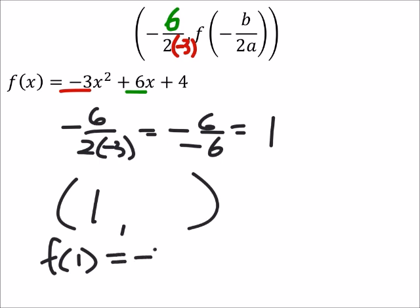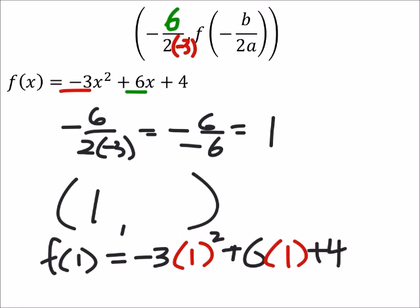So that would be a negative 3 times 1 squared, plus 6 times 1, and then finally plus 4. So what does this give us? This gives us a negative 3 plus 6 plus 4, and that would give us a total of 7.